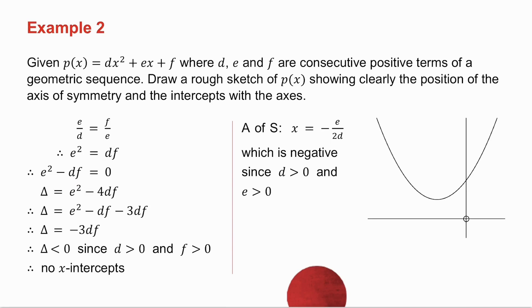Now, if I work with delta, delta is B squared minus 4 AC. So in this example, delta is E squared minus 4 D F. I split the minus 4 D F into minus D F minus 3 D F. Why have I done that? Well, I've done it because E squared minus D F I know is zero. So delta is just equal to minus 3 D F.